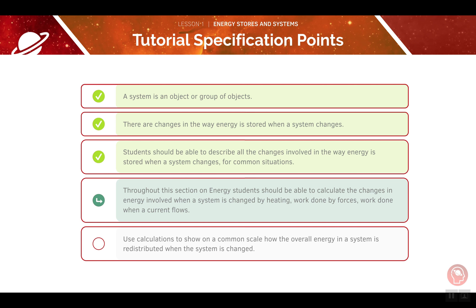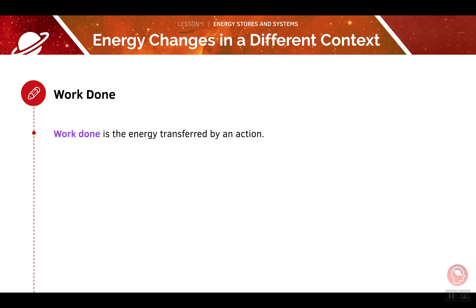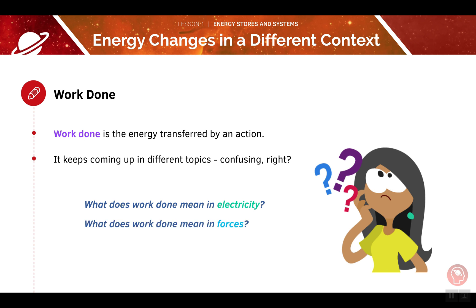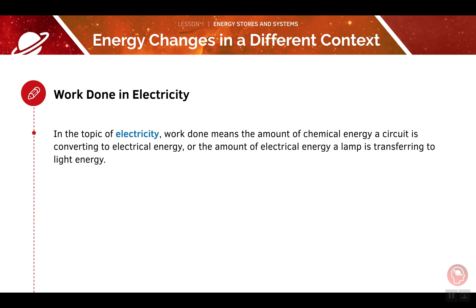Now we'll be looking at the fourth specification point, which will cover the term work done. Work done is a very important concept in physics — it is equal to the energy transferred by an action. It can be applied to various different topics, including electricity, forces, and heat.